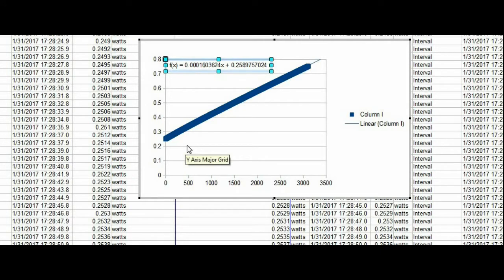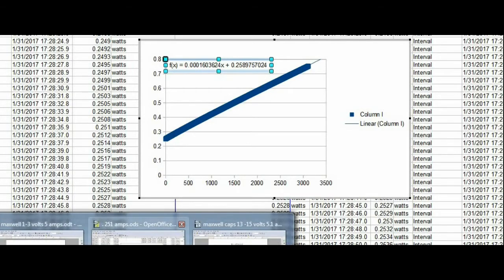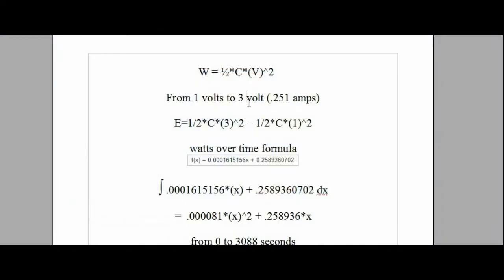I did the same thing that I did in the previous video. I took and graphed the watts from 1 volt to 3 volts over the time, and then I did a best fit line for the data and got the equation here. So for the quarter amp charge, our equation is here.